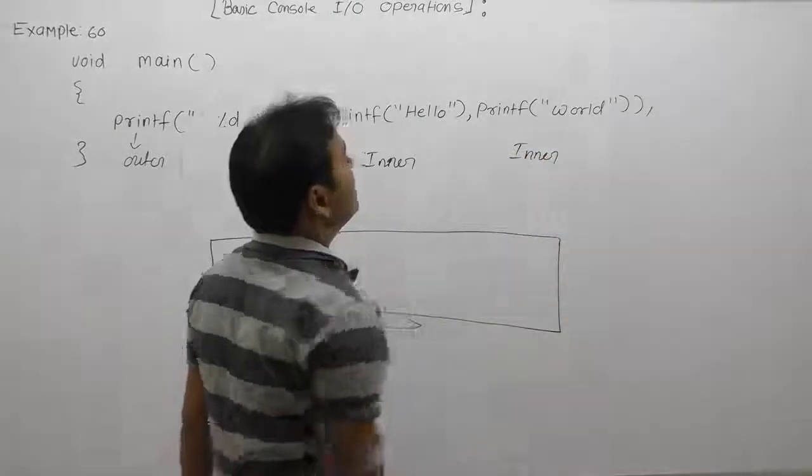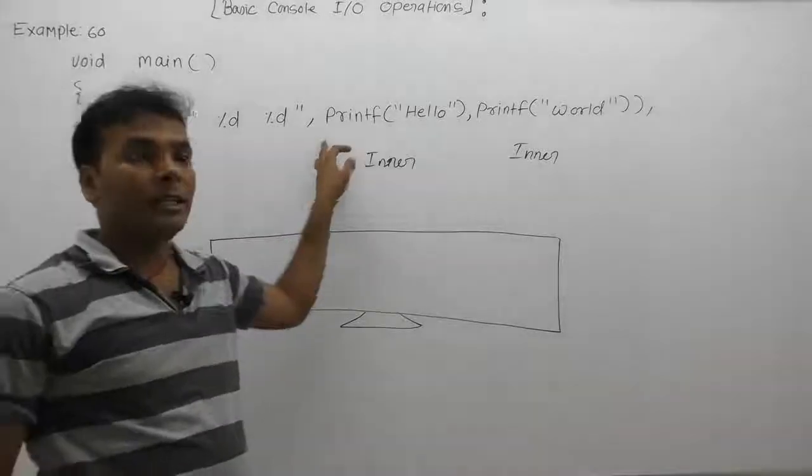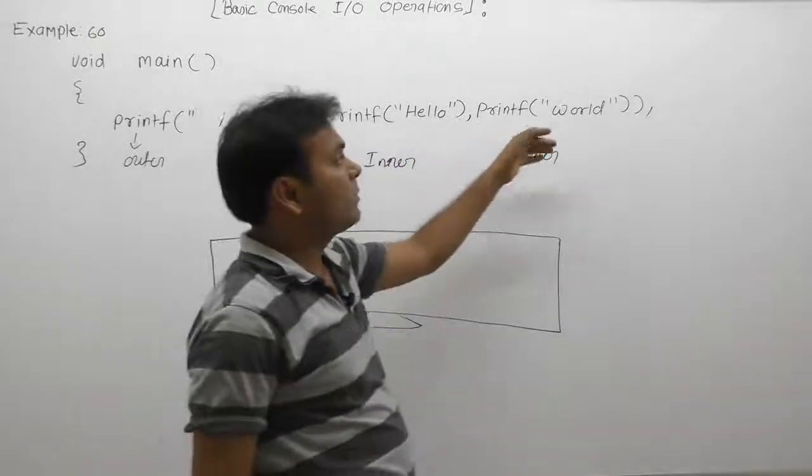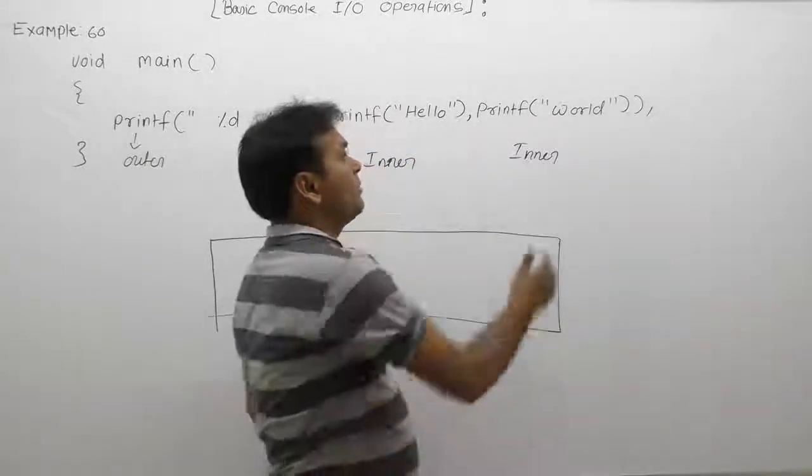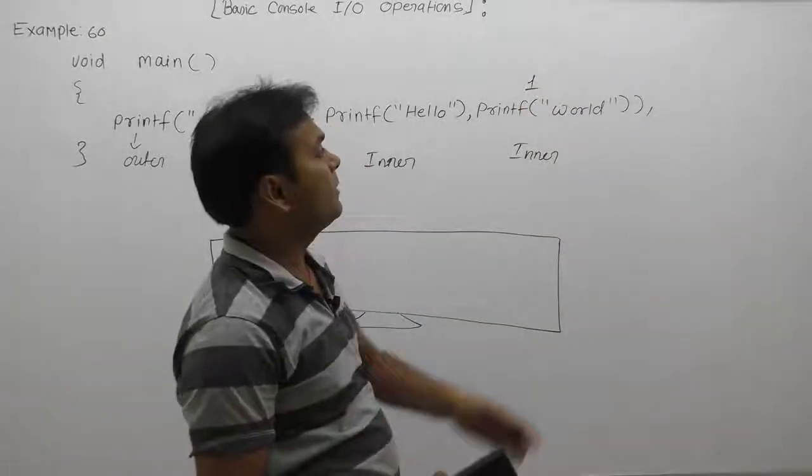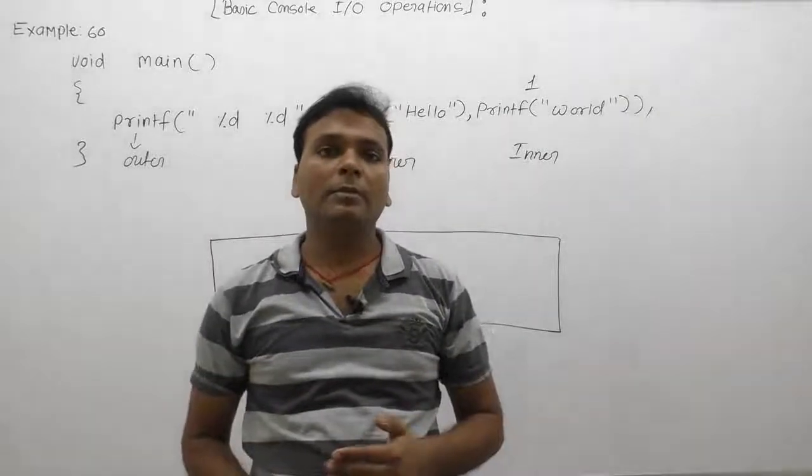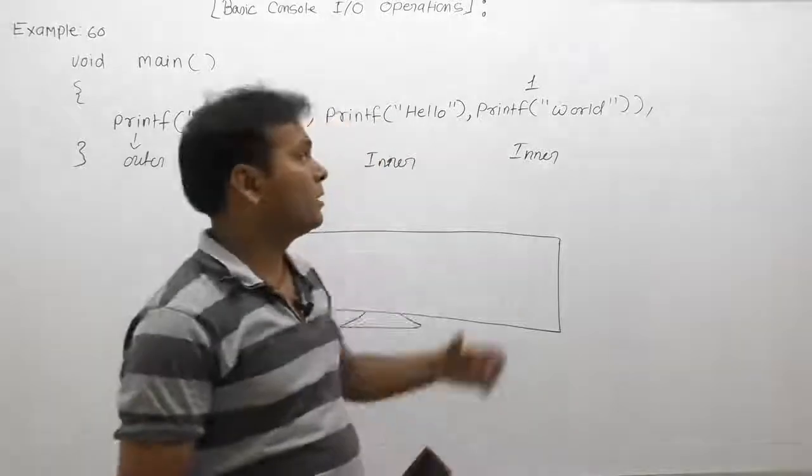Inner function is called two times. In that situation, if printf is more than one, then all the arguments will be solved from right to left. First of all, rightmost function is called printf that one. As we know, basic behavior of printf function, it will print a given message on the monitor.